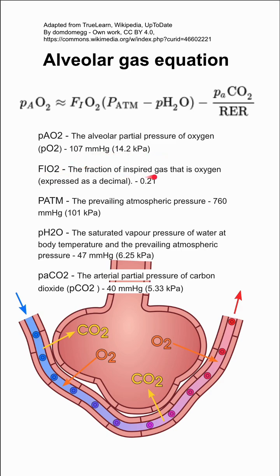FiO2 is the fraction of inspired gas. PaTM is the prevailing atmospheric pressure, again at sea level. pH2O is the saturated vapor pressure, and PaCO2 is the arterial partial pressure of carbon dioxide.